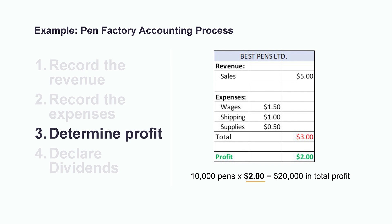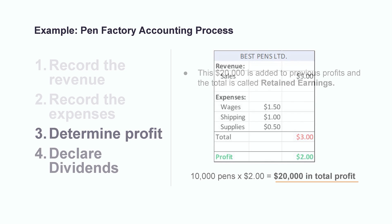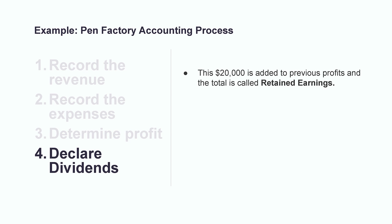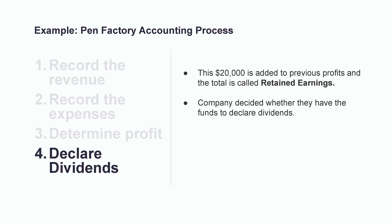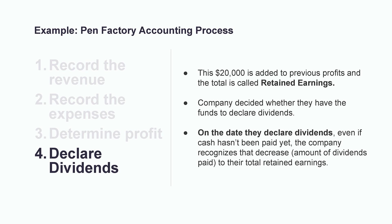Just like we discussed earlier, if we sold 10,000 pens in the first quarter of the year, that would give us $20,000 of total profit. And last, time to declare the dividends. This $20,000 profit gets dropped into the bucket with all our previous profit, which we call retained earnings. The decision makers in the company would now look at their total bucket of retained earnings and decide whether they have the funds to declare dividends. On the date that the dividends are declared, even if the cash hasn't been paid yet, the company would recognize that decrease to their total retained earnings.